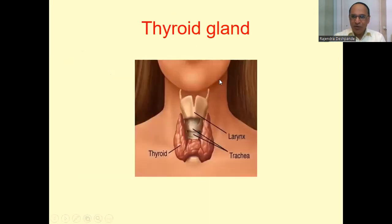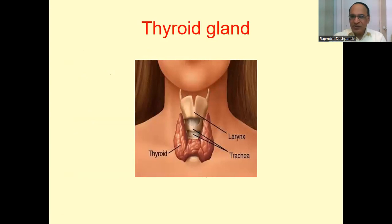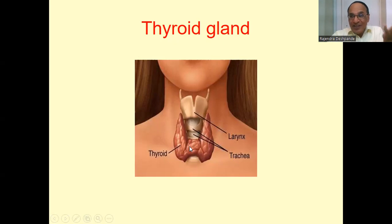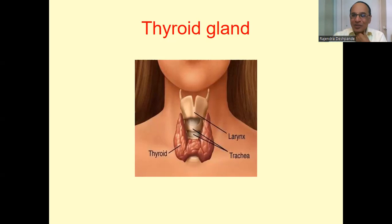The thyroid gland is located on both sides of the larynx in the neck — the larynx being the voice box, and below it the trachea, part of the respiratory system. There are two lobes of the thyroid gland, right and left, joined together by the isthmus. Many common people don't know where the thyroid gland is, even though doctors say they have a thyroid problem.